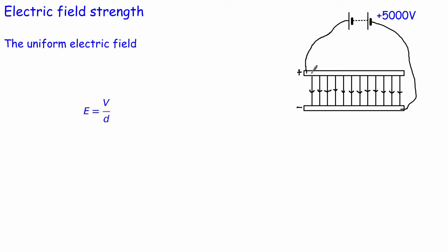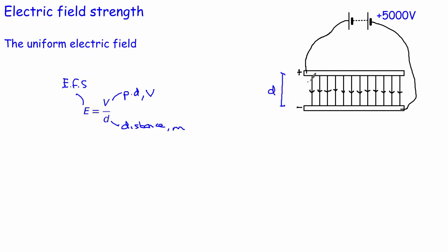For a uniform electric field, the electric field strength E equals the potential difference V across the plates (measured in volts) divided by the distance d between the plates (measured in metres). So E = V/d, and because we're dividing volts by metres, electric field strength also has units of volts per metre.